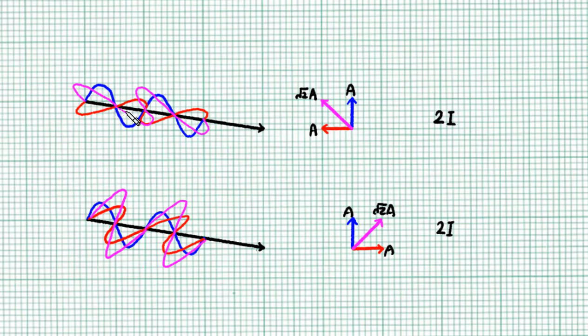Actually we didn't even have to bother to figure out what the resultant wave look like. The key is this, right? No matter how we line up the blue and the red wave, the vertical amplitude is still going to be a and the horizontal amplitude is still going to be a. No matter how the red and the blue waves are aligned, the resultant wave is always going to have an intensity of 2i.